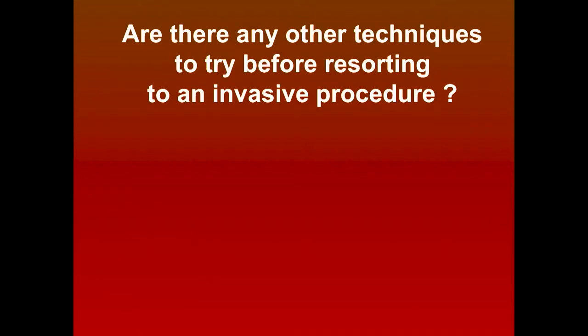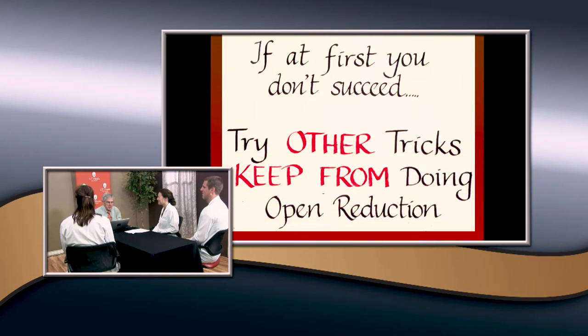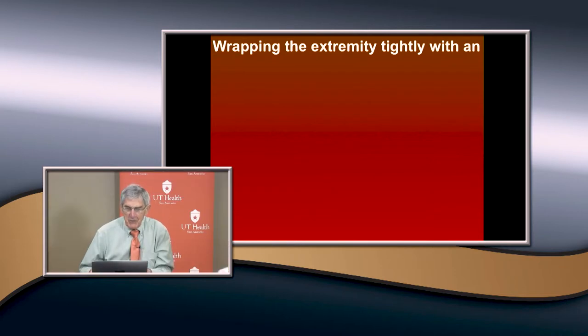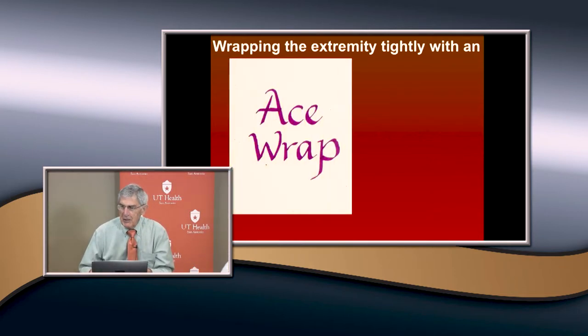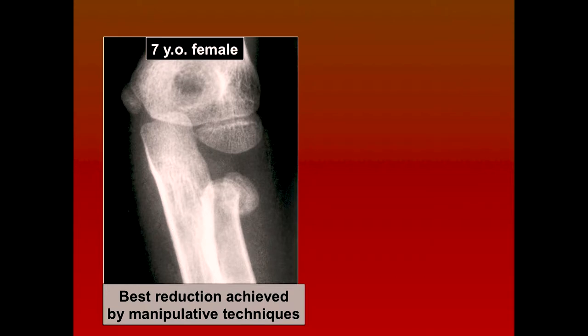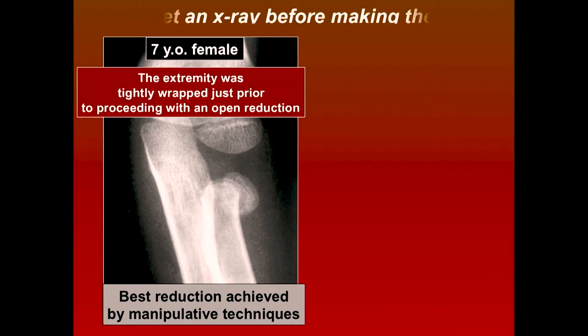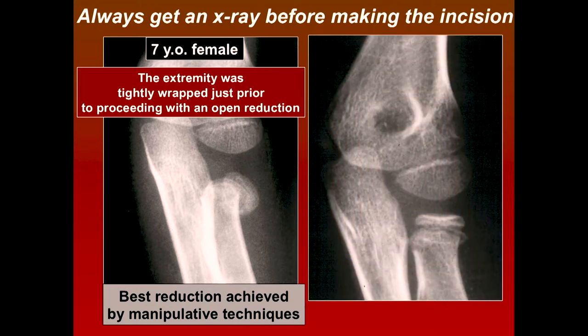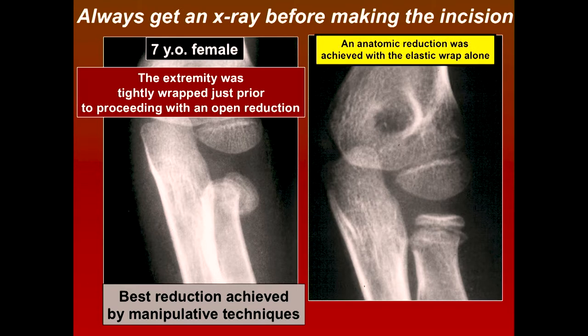Are there other techniques to try before an invasive procedure? Yes - I learned this by experience. I had a patient I thought we were going to operate on, and to exsanguinate the arm I wrapped it tightly with an ace wrap. And look - the fracture that was the best we could get by manipulation was now anatomically reduced. Always take an x-ray before you make your incision after applying elastic compression. An anatomic reduction was achieved with the elastic wrap.